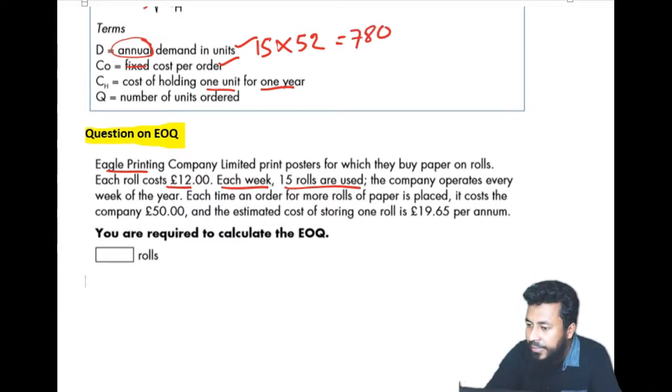Keep reading. The company orders every week of the year. That's why 52. Each time an order for more rolls of paper is placed, it costs the company 50. So cost of order, your CO is 50.